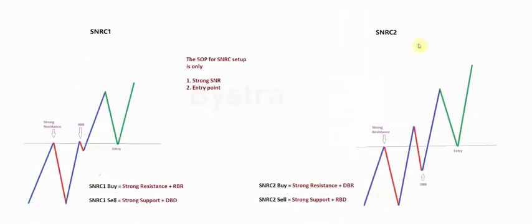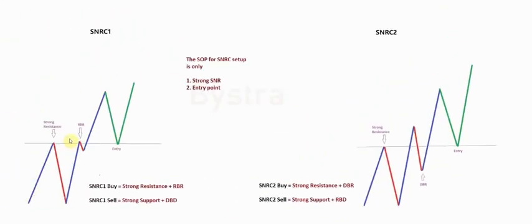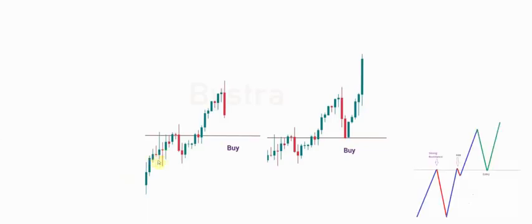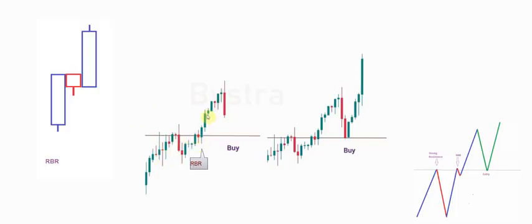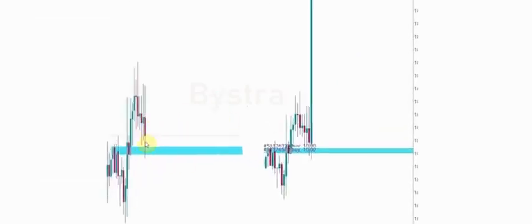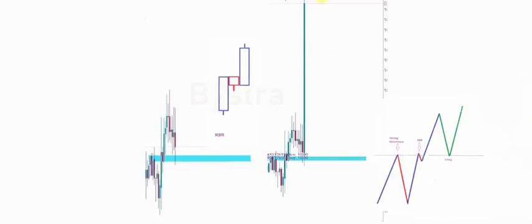All right, next we move to SNR-C2. SNR-C2 is slightly the same as SNR-C1, but the entry point is different. For SNR-C1 the entry point is rally-based rally, but for SNR-C2 buy, we change to drop-based rally and entry at the same location where the strong resistance is located. Here's the example: we have strong resistance, and this strong resistance is in the same line with rally-based rally, then price came back and continued to fly.